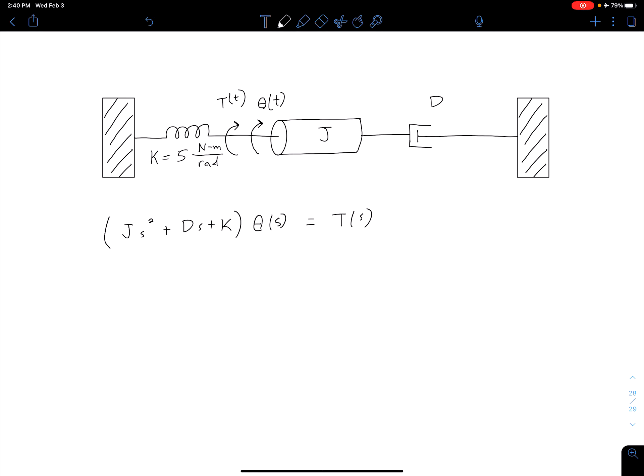If we want our transfer function, our angular position is our output, our torque is our input. So we can then say our transfer function G(s) is equal to that angular position divided by our torque.